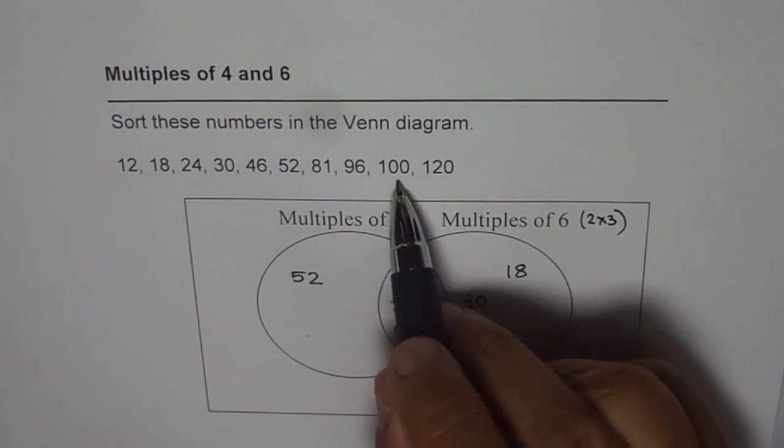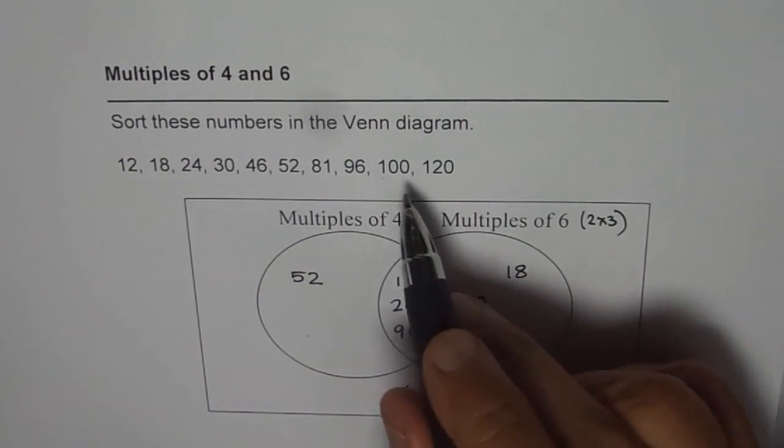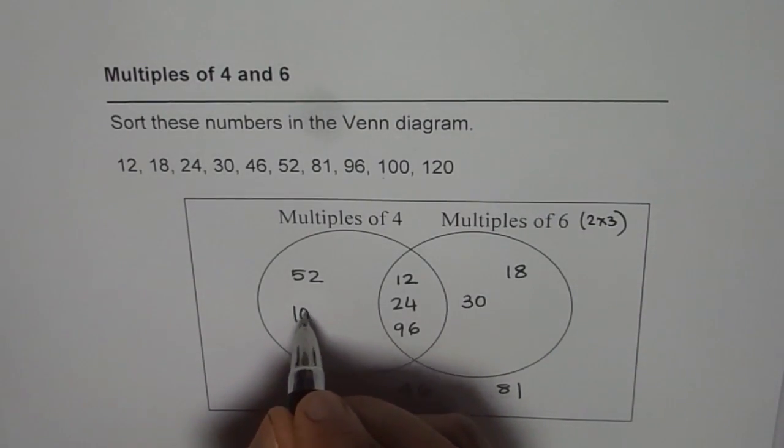Let's take 100. 1 cannot be divided by 3, so it is not a multiple of 6. But it is a multiple of 4—4 quarters, right? So 100 comes here.